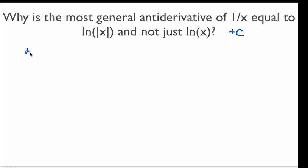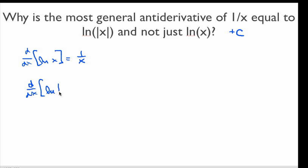For previous work, we already know that natural log of x is an antiderivative for 1 over x, because if I take the derivative of log x, I get 1 over x. So there are really two questions we have to answer. First, is it true that the derivative of natural log absolute value of x also equals 1 over x? And if it is — and we will show that it is — why should we prefer this function with the absolute values over natural log of plain x as an antiderivative for 1 over x?